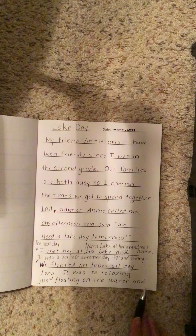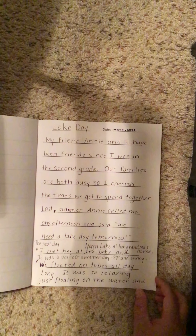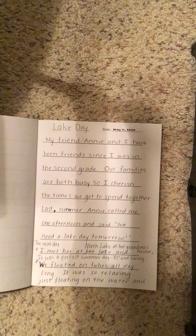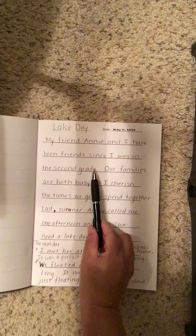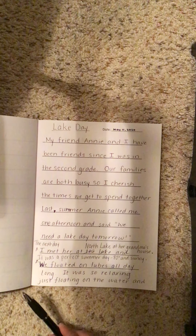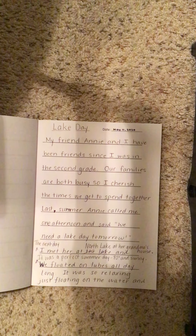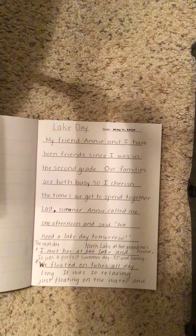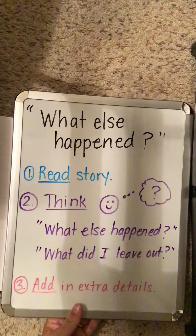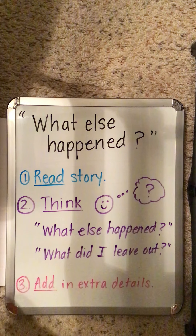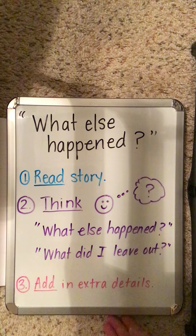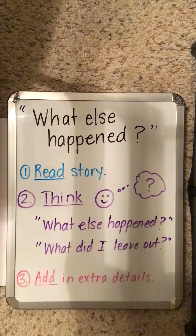Now I know there are other parts of the story I could add to make it longer. Our goal as second graders is to have at least five sentences. Counting what I have, I'm already beyond five sentences. What I would like you to do today, boys and girls, is to use this strategy of 'What Else Happened?' to try to add details to your writing to make it better. I can't wait to read what you write.